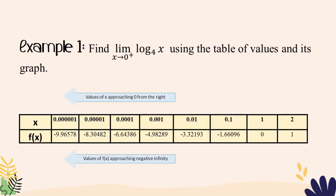Let's have our first example: Find the limit of log base 4 of x as x approaches 0 from the right. We'll use a table of values. Since x is approaching 0 from the right, the values we assign to x must approach 0 from the right. We have chosen the values 2, 1, 0.1, 0.01, 0.001, 0.0001, 0.00001, and their corresponding values of f(x).